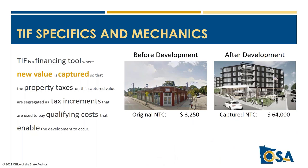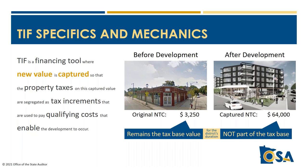In a TIF district, the original net tax capacity is essentially frozen and remains the tax base for calculating rates and supporting local levies for the entire duration of the district. The new captured value is not part of that tax base and does not support local levies for any jurisdiction. The original net tax capacity typically doesn't change much, but there are adjustments for things like changing classifications, property going exempt or taxable, or legislative changes to class rates.